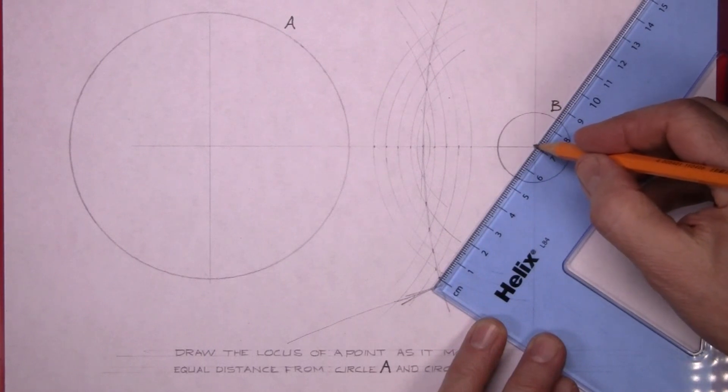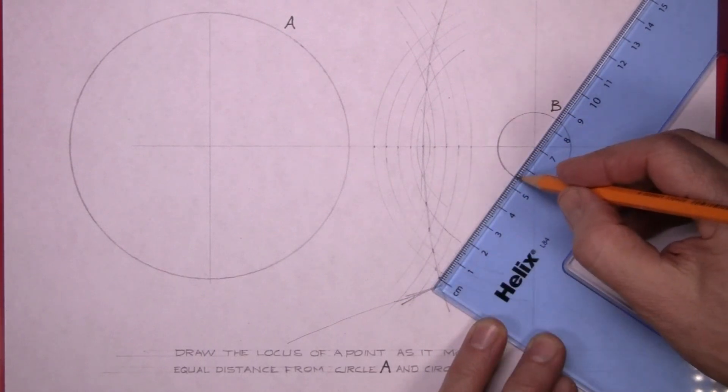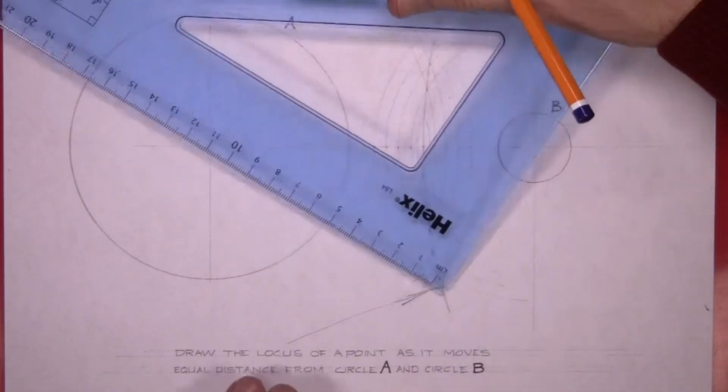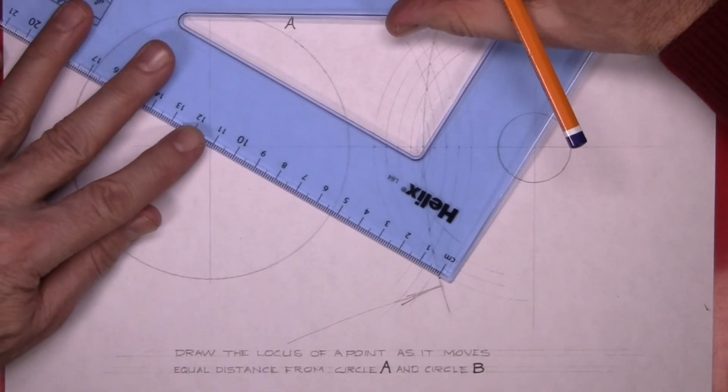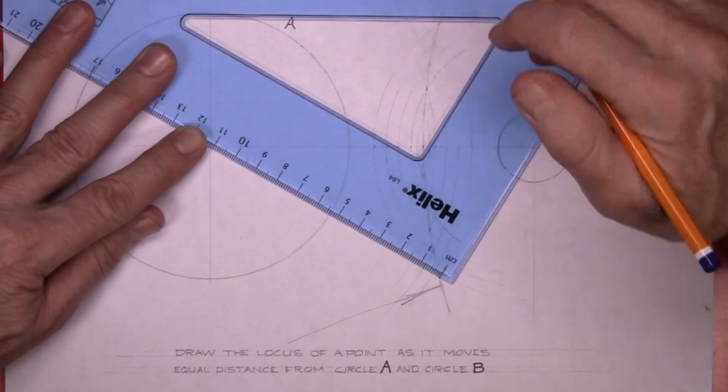So that distance there is 55 to the edge of the circle. Line up with the center of the circle again here and your measurement is 55.